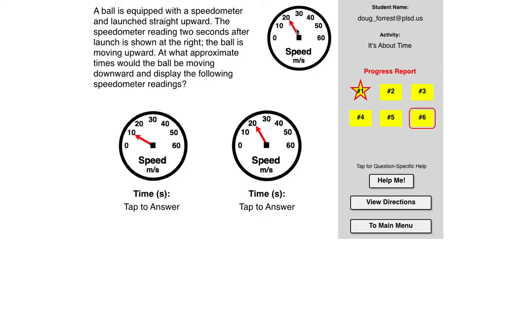So that was its launch speed is 40 meters per second up. At what approximate times would the ball be moving downward and display the following speedometer readings? Again, you have to read carefully. Some of these are going to say upward.